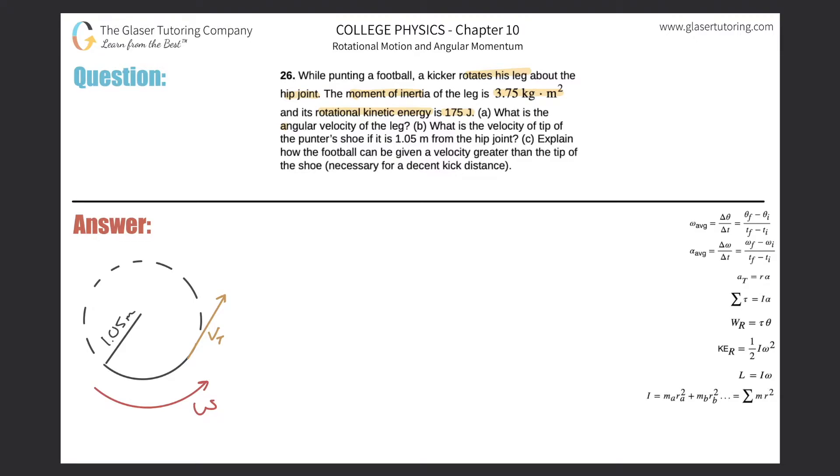Here's a simplified picture of the leg rotating about the hip joint, which is located right here. The leg has a certain angular velocity and also has a certain tangential velocity as well.